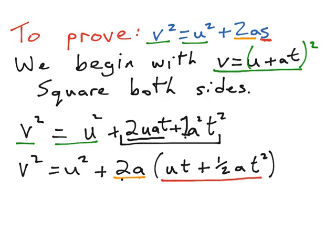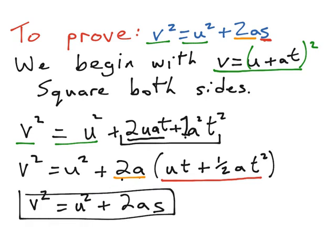So our final line is to say that the final speed squared, v squared, is equal to u squared plus 2a, and everything inside of the bracket is just the displacement, which is just the letter s. And that's the proof completed.